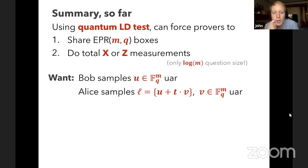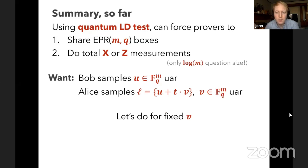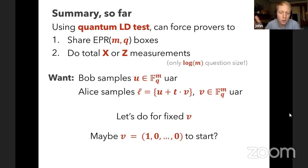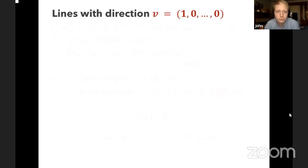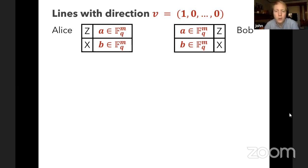Our goal is for Bob to sample a point u in F_q^M uniformly at random, and for Alice to sample a direction v and then the line L through u in direction v. I'll fix v for now to the simplest vector: a one in the first coordinate and zeros elsewhere. Using the low degree test, we can force them to share EPR boxes. I'll rename the first cell from a to u. The verifier tells Bob to do a total-Z measurement; Bob reads off u and reports it back, giving us a random point.